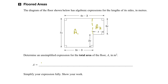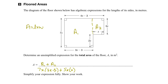So the total area would be area 1 plus area 2. Since area is equal to length times width, area 1 would be 7x times 3x minus 3. And area 2 would have a length of 5x and a width of x, so the area would be 5x times x. We're adding these two areas together to get the total area, and this is one unsimplified expression for the total area of this floor plan.